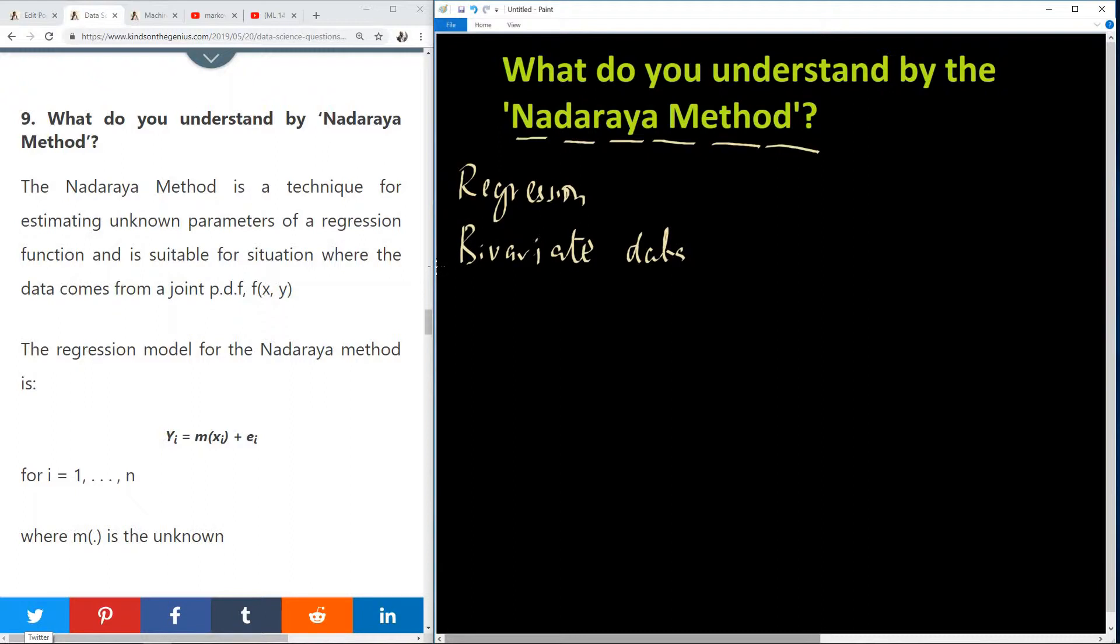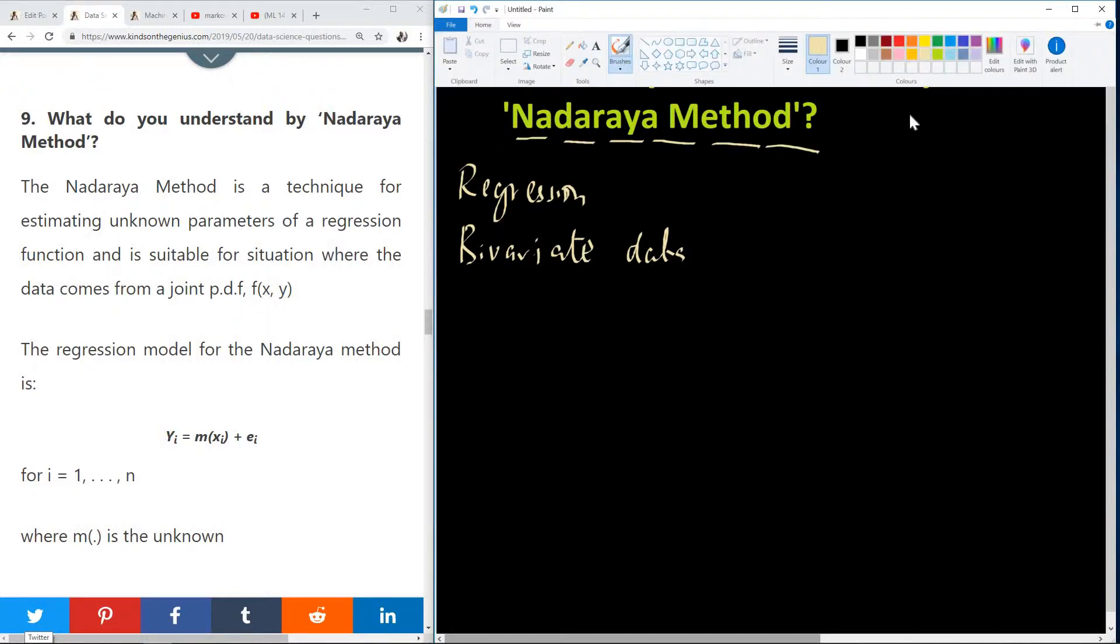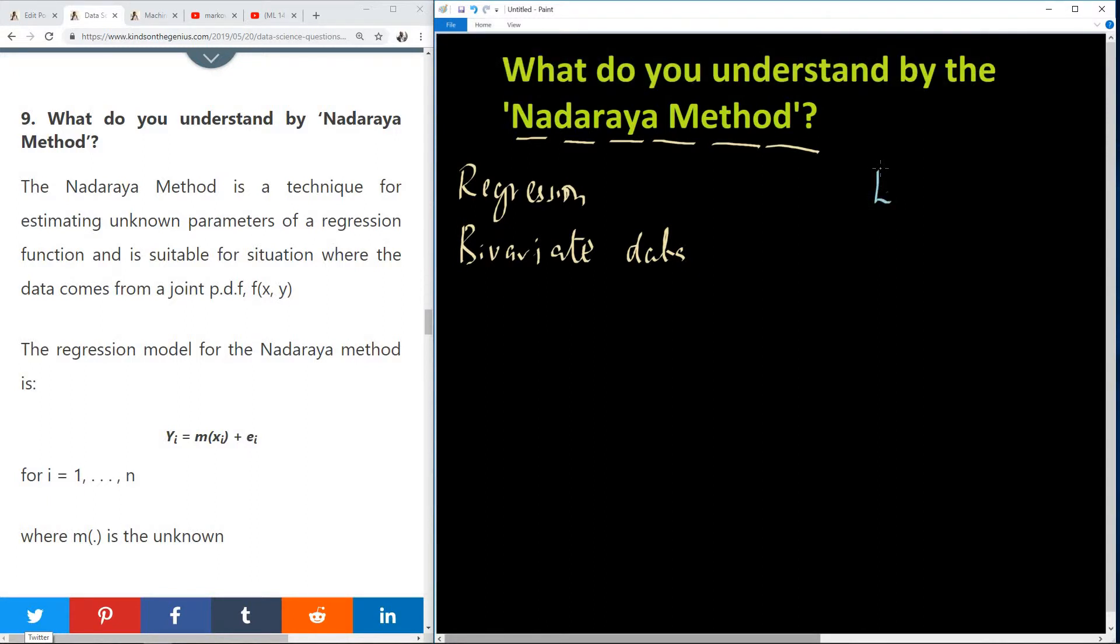The Nadaraya method is a technique. Let me just give you the name of the guy, this Nadaraya, his real name is a mathematician called Elisba Nadaraya, who actually came out of this method. So it's a technique for estimating unknown parameter of a regression function that is suitable for situation where the data comes from a joint probability distribution, f of x, y.